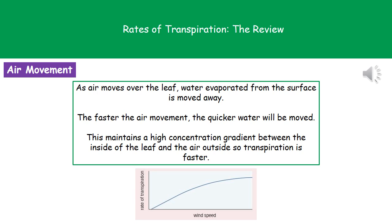Air movement is our next factor. As air moves over the leaf, the water that's been evaporated is moved away. If we've got rapid air movement, then our evaporated water is going to be moved away from the surface much faster. The reason this makes transpiration happen faster is that it maintains the concentration gradient between inside the leaf and the air outside. Just as with diffusion, if there's a steeper concentration gradient, the particles are able to move quicker. So when we increase the wind speed, we increase the rate of transpiration.